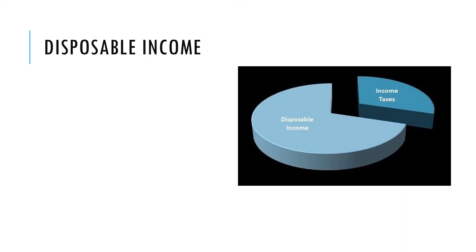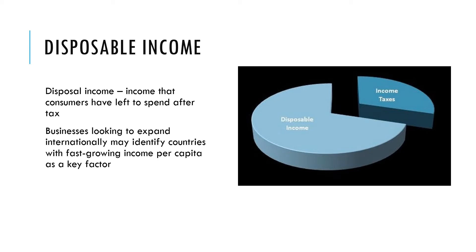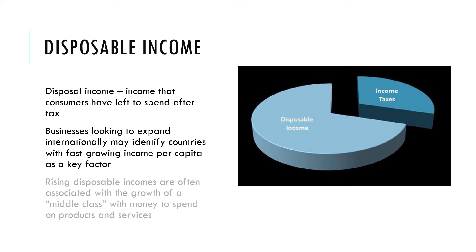The first factor is disposable income in the country we're considering entering. Disposable income is income that consumers have left to spend after they've paid taxes — this is really the money they can use to spend on goods and services. Businesses looking to expand internationally may identify countries with fast-growing income per capita as a key factor, as rising disposable incomes are often associated with the growth of a middle class. The middle class typically have money to spend on products and services, and companies from western developed economies often make products targeted at this middle class market.